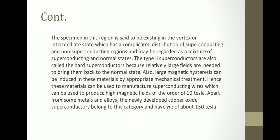The specimen in this region is said to be existing in the vortex or intermediate state, which has a complicated distribution of superconducting and non-superconducting regions and may be regarded as a mixture of superconducting and normal states. The Type II superconductors are also called the hard superconductors because relatively large fields are needed to bring them back to the normal state. Also, large magnetic stresses can be induced in these materials by appropriate mechanical treatment.